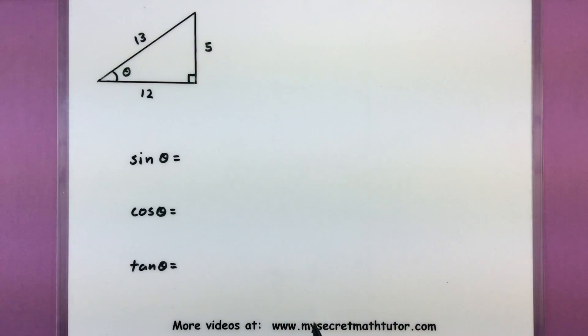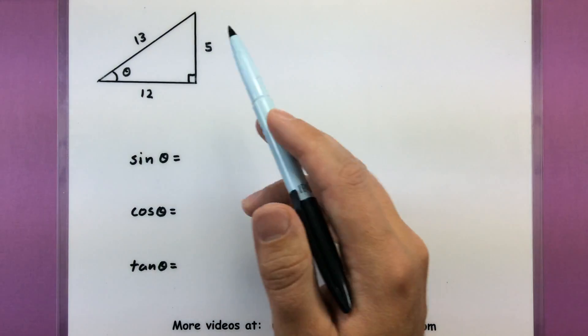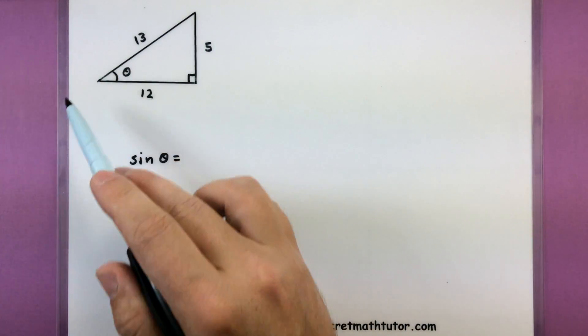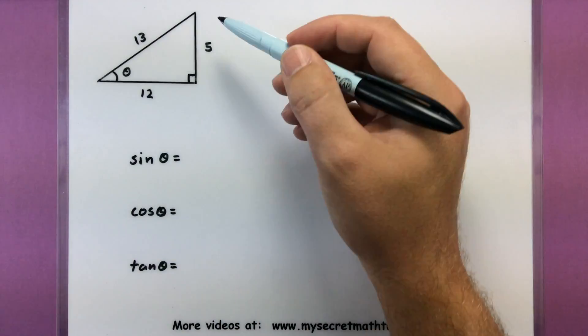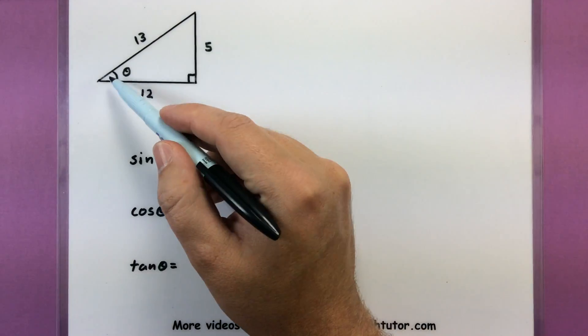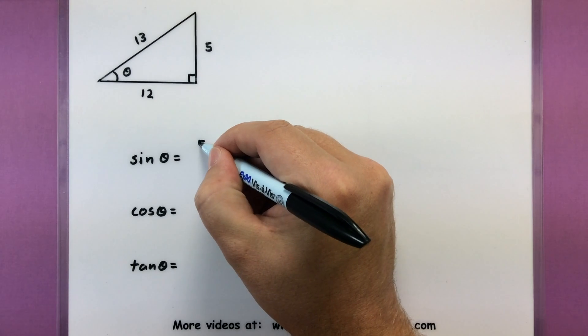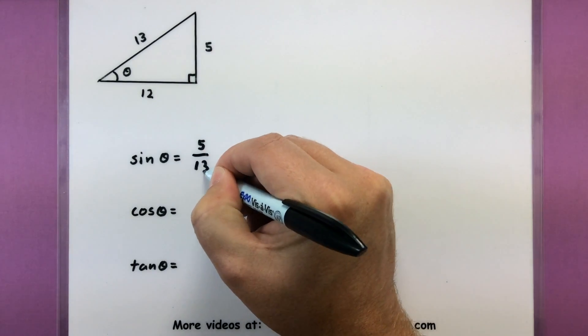So up here I have my triangle, and I'm really curious, what is the value of sine of theta? I'm thinking about this angle in the bottom left corner, and I'm going to take the opposite side and put it over the hypotenuse. So sine would simply be 5 thirteenths.